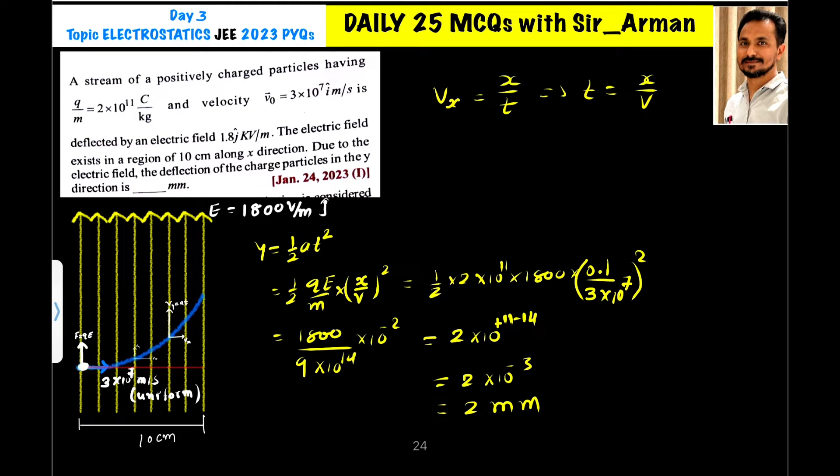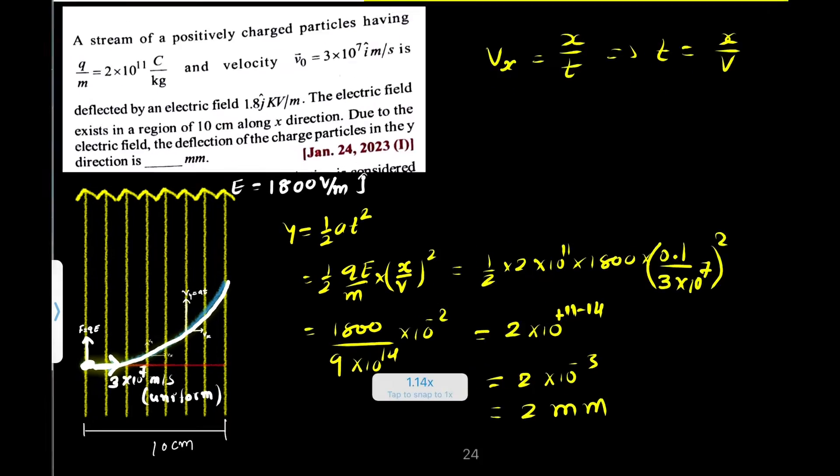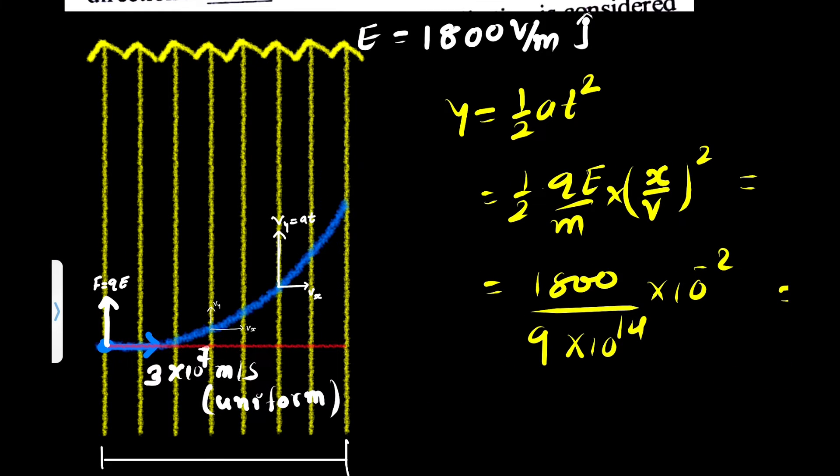So similarly here we have a charge particle which is fired horizontally. This charge particle gets deflected due to the electric field hence its velocity increases. So in the x direction its velocity is uniform which is vx, whereas in the y direction its velocity increases with equation v is equals to at.